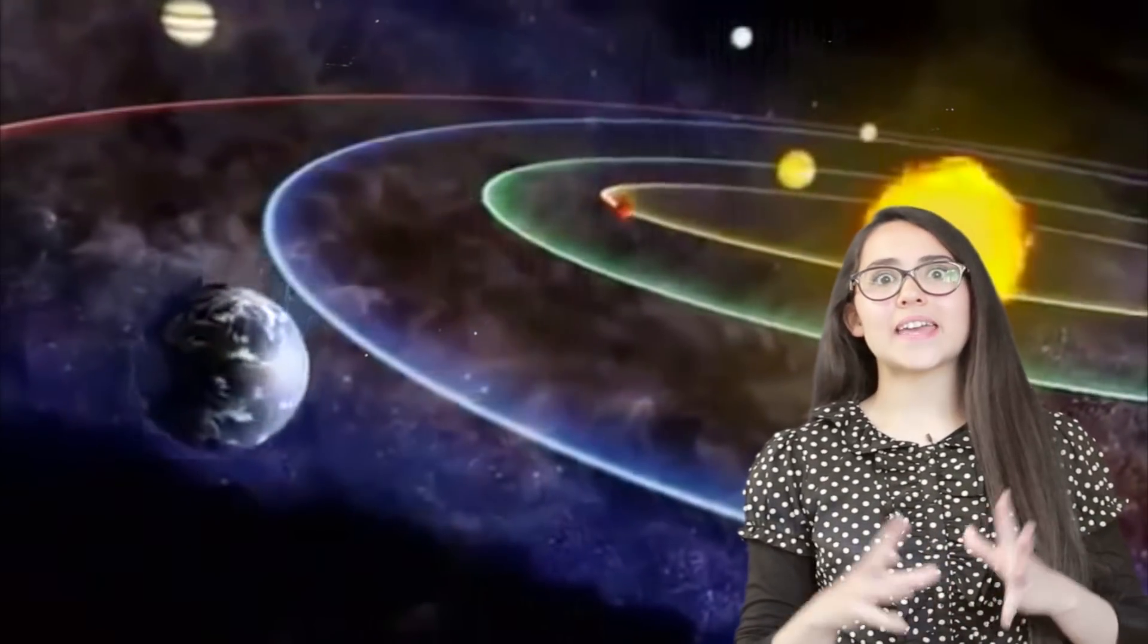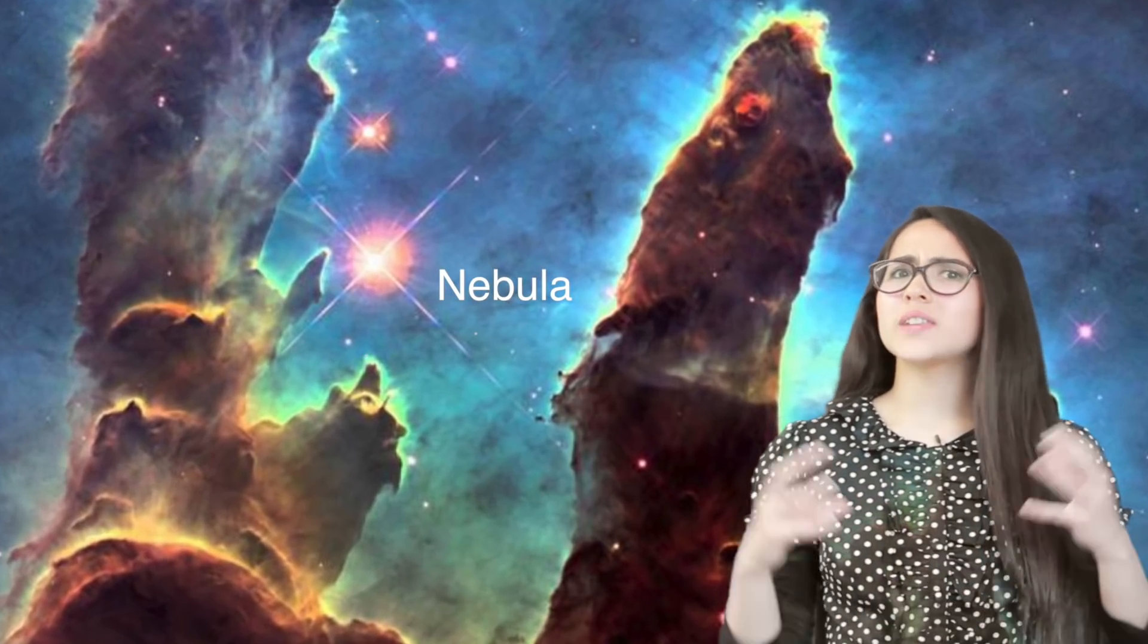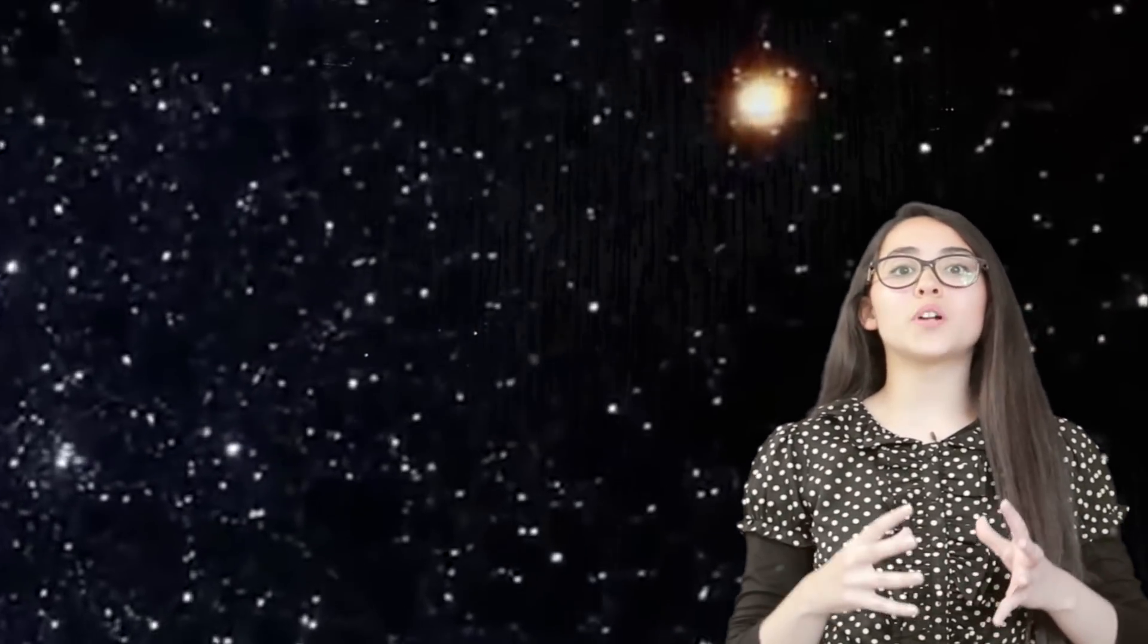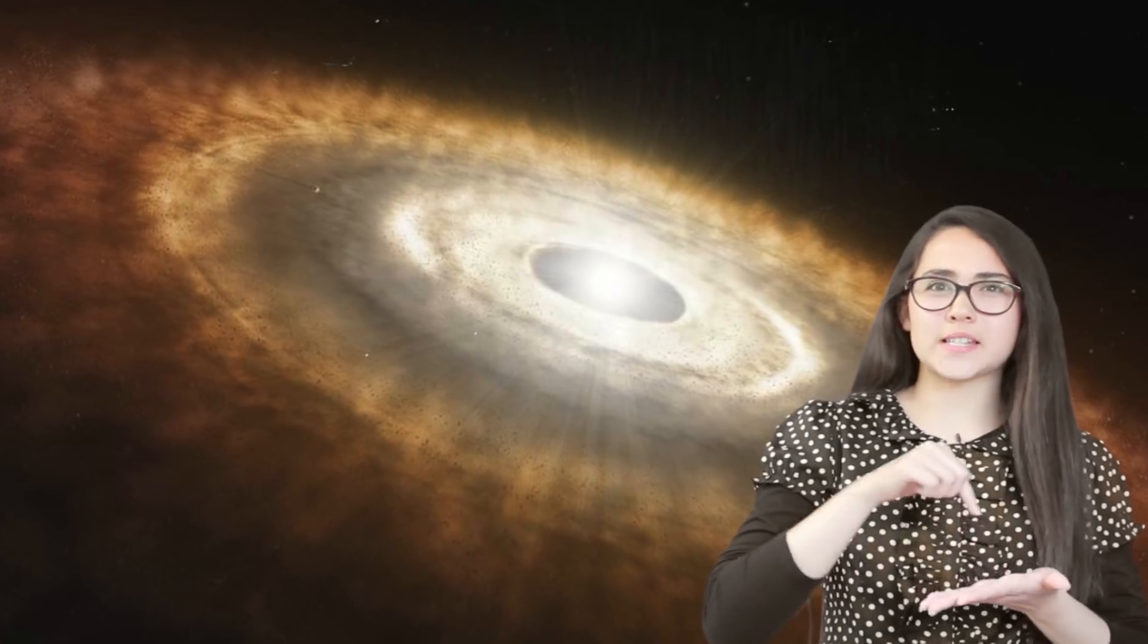Stars start out in giant clouds of dust called nebula. Gravity collects a star in the first place, then wants to crush it. Gravity never gives up and forces the dust to bunch together. As more and more dust bunches up, gravity gets stronger and it starts to get hot and becomes a protostar. Once the center gets hot enough, nuclear fusion will begin and a young star is born.